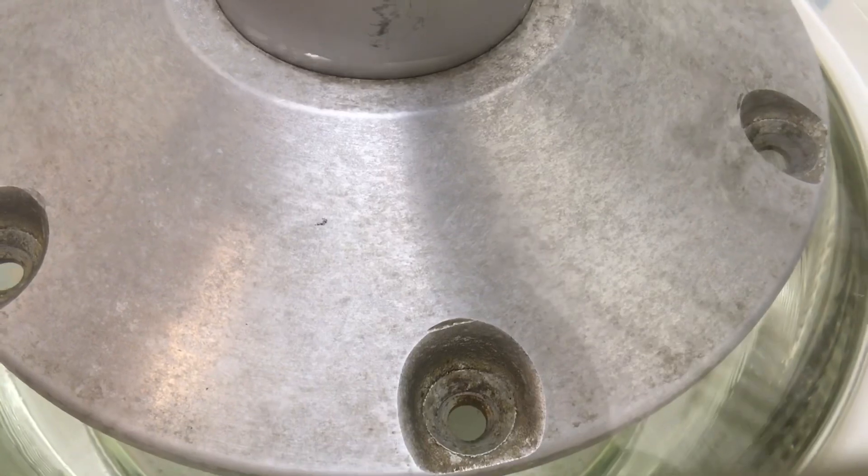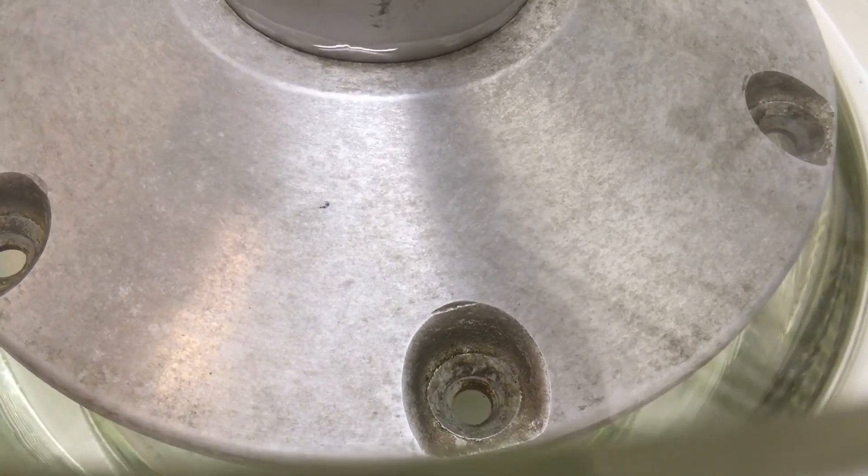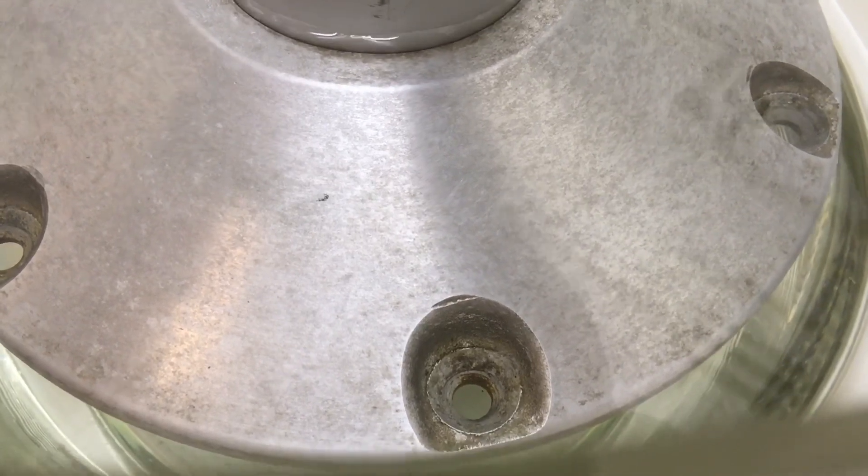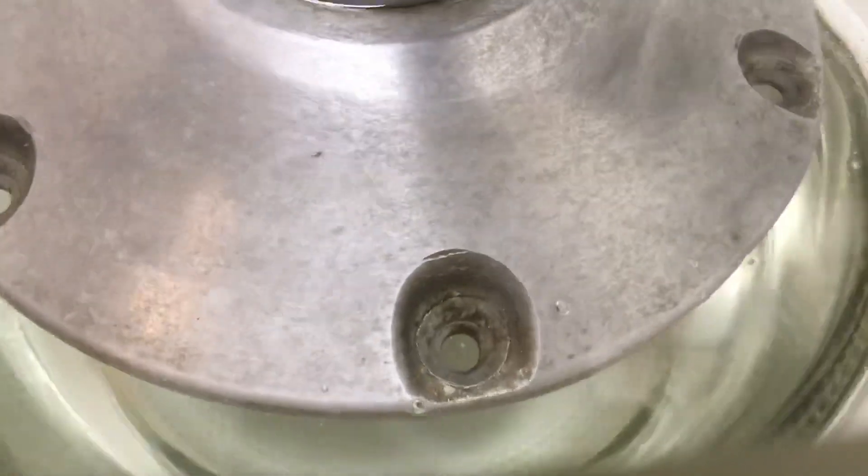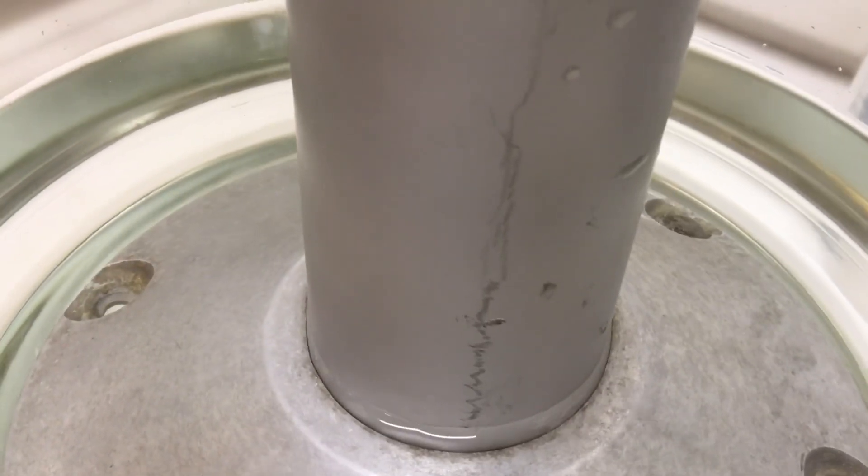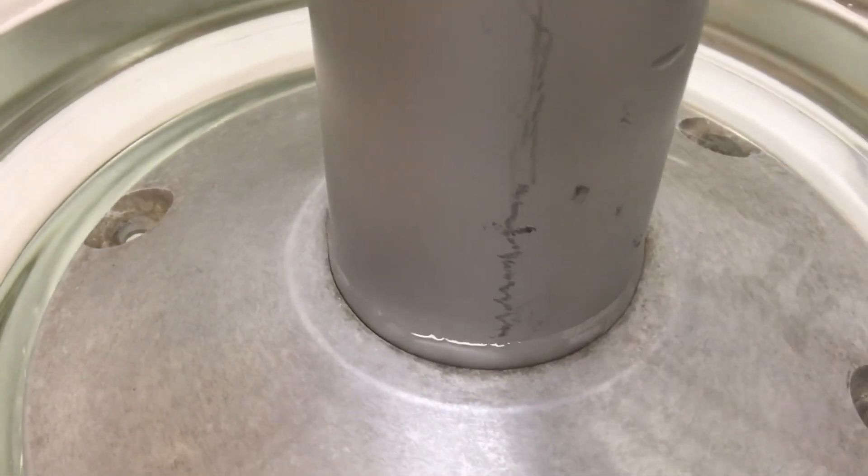That's because the aluminum itself has this cover of oxide on its surface, and that protects the aluminum from reacting. But if I stir this around a little bit here, you may start seeing that there are bubbles coming, and that's hydrogen gas being formed.